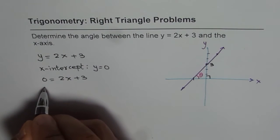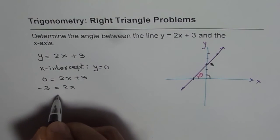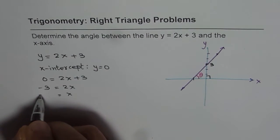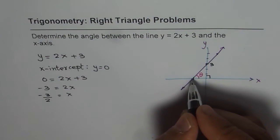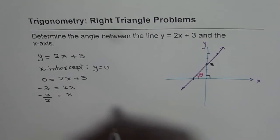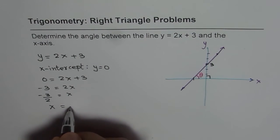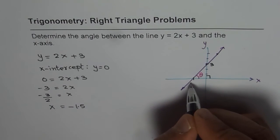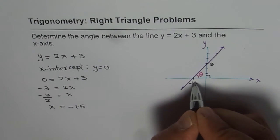And from here, we can write minus 3 equals 2x or x equals minus 3 over 2. So this position here is 1.5. So we can write x equals minus 1.5. So this position is minus 1.5.